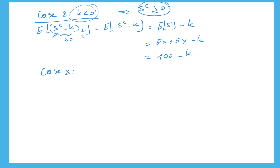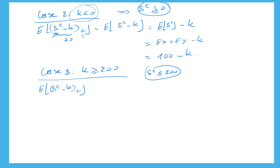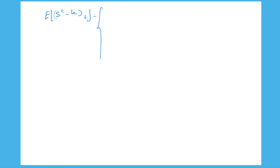Case 3: k > 200. Since SC can only be 0 or 200, SC is always ≤ 200, so SC − k is always 0 and the stop-loss premium is 0. To summarize: the stop-loss premium of SC is 100 − k for k < 0; (200 − k)/2 for k in [0, 200]; and 0 for k > 200.